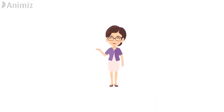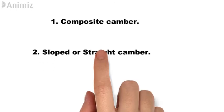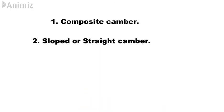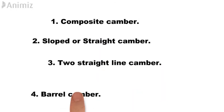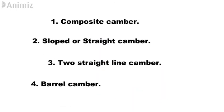Cambers are classified as four types: composite camber, sloped or straight camber, two straight line camber, and barrel camber.